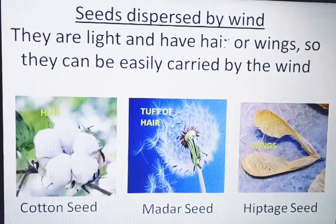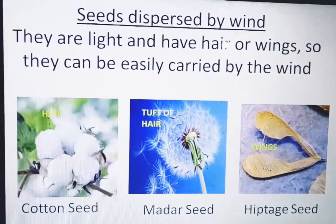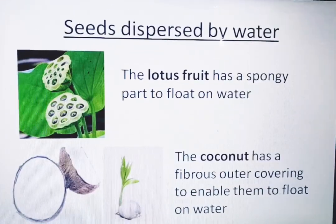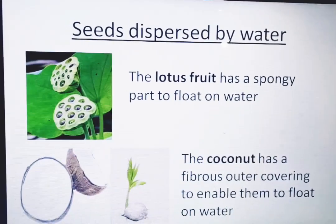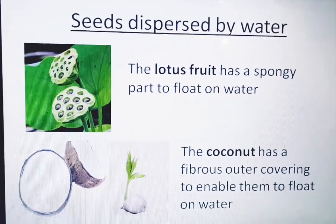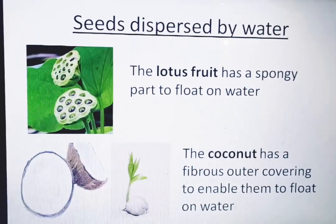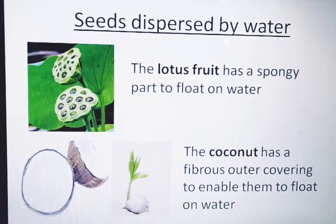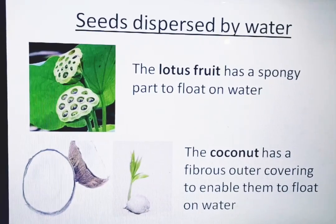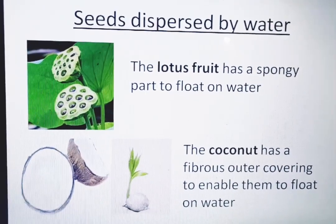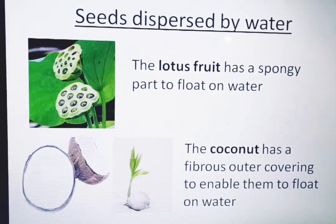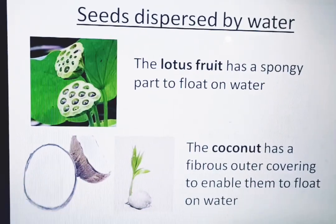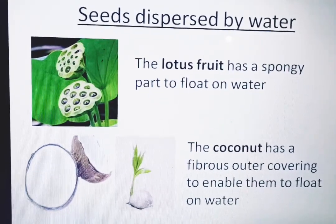Examples of wind-dispersed seeds are cotton seed, madar seeds, and hyptate seed. Seeds dispersed by water: examples are the lotus fruit, which has a spongy part to float on the water, and the coconut, which has a fibrous outer covering to enable it to float on the water.